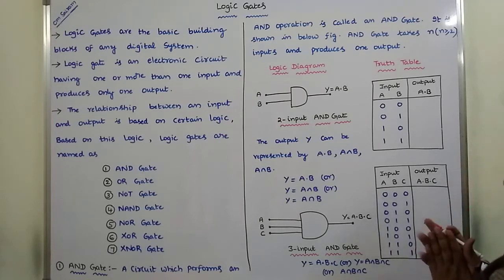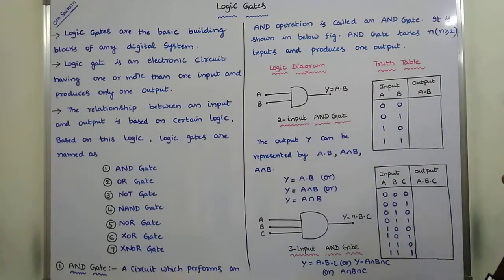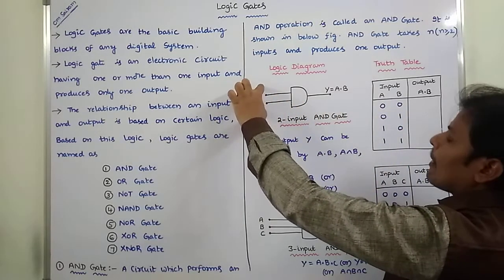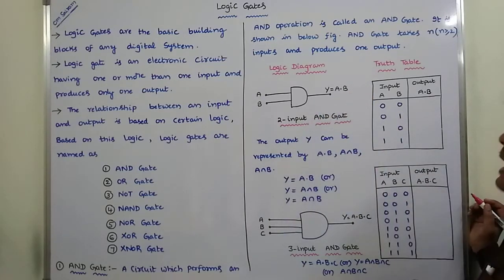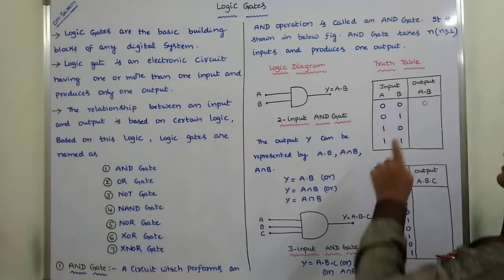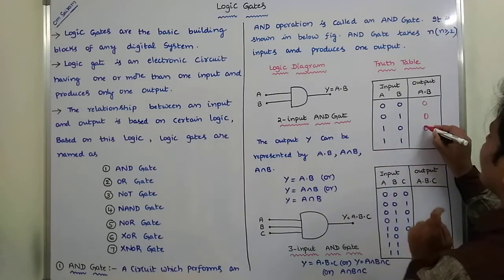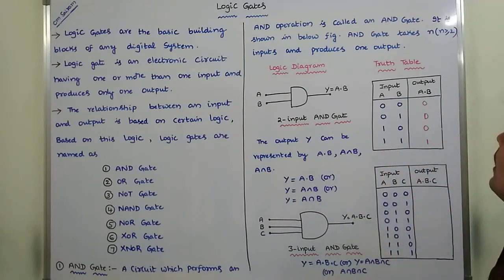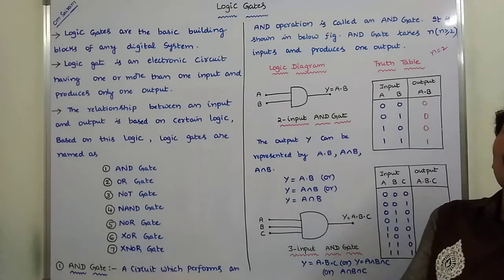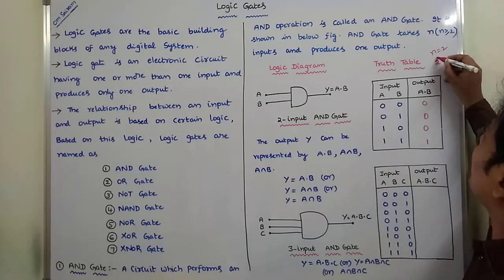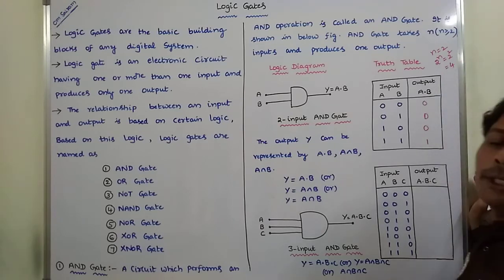This is the truth table of the two-input AND gate. Here n equals 2, so the number of input combinations is 2 power n = 2² = 4 input combinations. The four input combinations are: 0,0 — 0,1 — 1,0 — 1,1. The A value is multiplied with the B value: 0×0=0, 0×1=0, 1×0=0, 1×1=1.